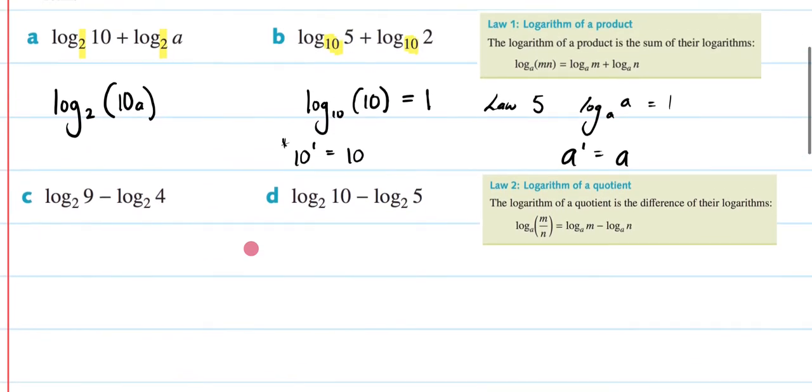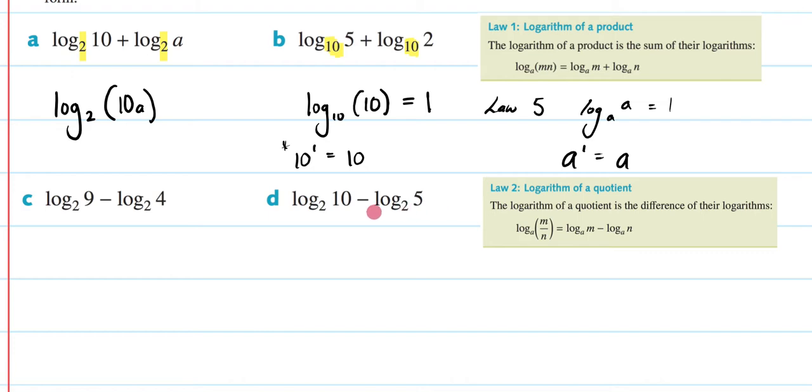So next we need to use log law 2 to answer C and D. So this is the logarithm of a quotient. So the logarithm of a quotient is a difference in their logarithms. So right here, again, we have the same bases. So that means we can divide 9 and 4. So we're going to get log₂(9/4). And that's our answer to that one.